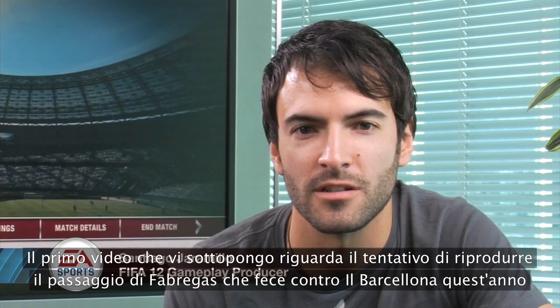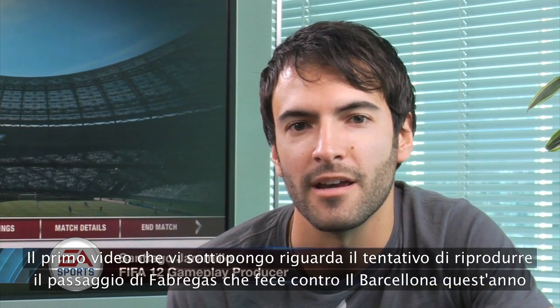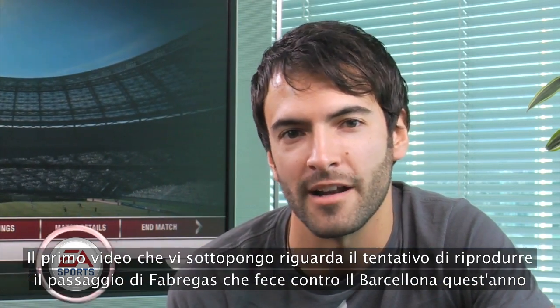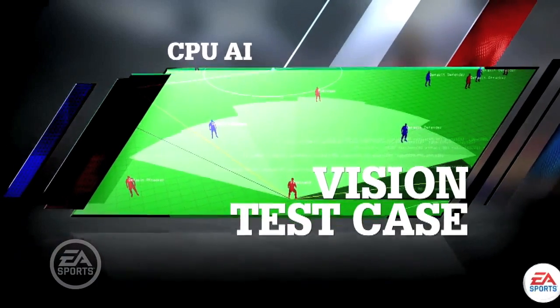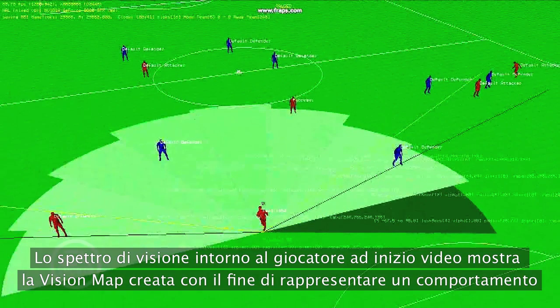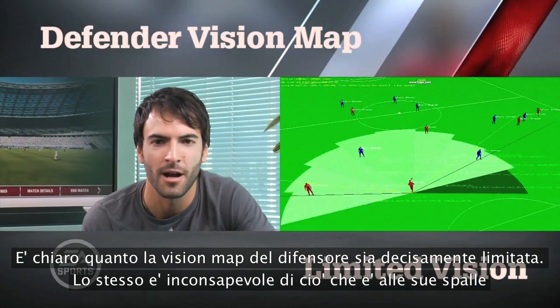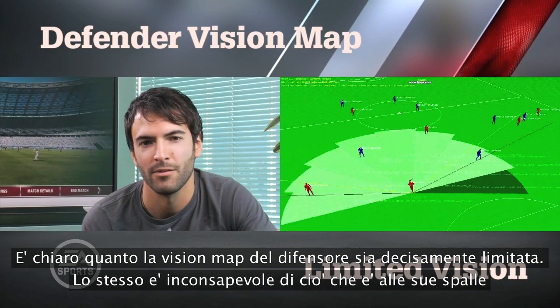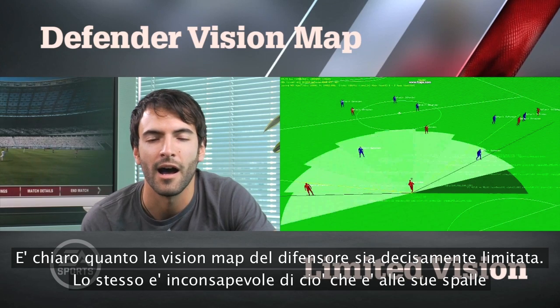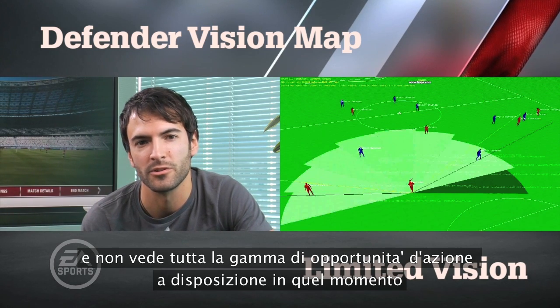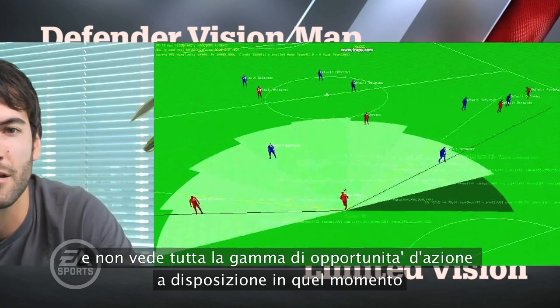This first video is our attempt to replicate a Fabregas pass that happened against Barcelona this year. As you can see, there are some wedges around the defender who is in possession of the ball at the beginning of the video. These wedges are what we're calling the vision map — a concept we've created to replicate this behavior. The defender's vision map is not very big; he doesn't have a lot of vision behind him and doesn't see all the opportunities presented in a play at a given moment.